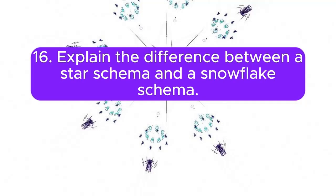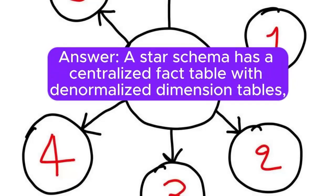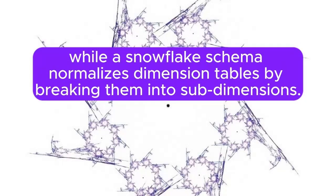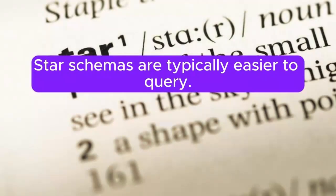Question 16: Explain the difference between a star schema and a snowflake schema. Answer: A star schema has a centralized fact table with denormalized dimension tables, while a snowflake schema normalizes dimension tables by breaking them into sub-dimensions. Star schemas are typically easier to query.